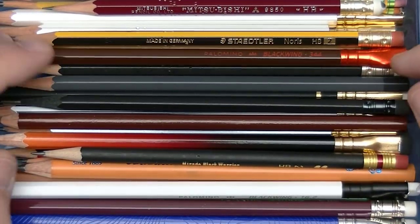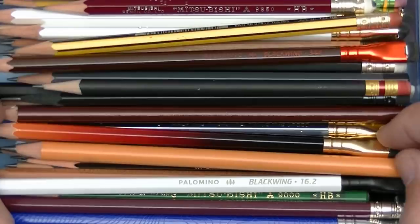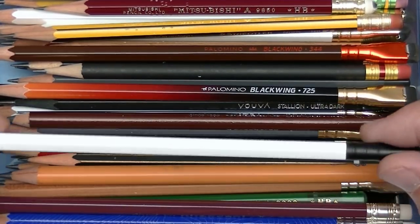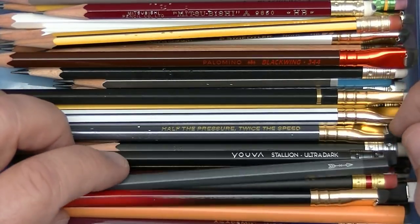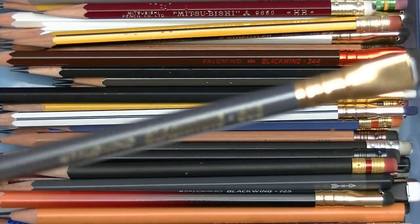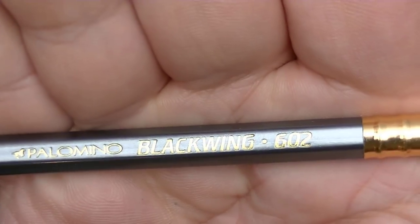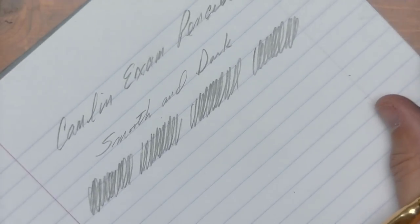Let's see, why don't we compare it to a Blackwing 602 and see what the difference is. Alright, Blackwing 602. Same kind of pressure routine here. Here we go.